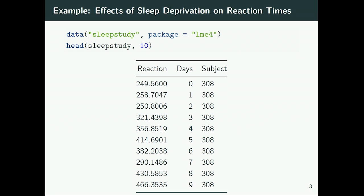Subjects get progressively less sleep each day and we see how the reaction time goes up over consecutive days of sleep deprivation. This is typical, very simple multilevel data: we have the reaction time in milliseconds, the days of sleep deprivation starting at day zero as baseline, and we see the subject ID indicating to which subject each observation belongs. We have to account for this because observations from the same subject tend to be dependent.